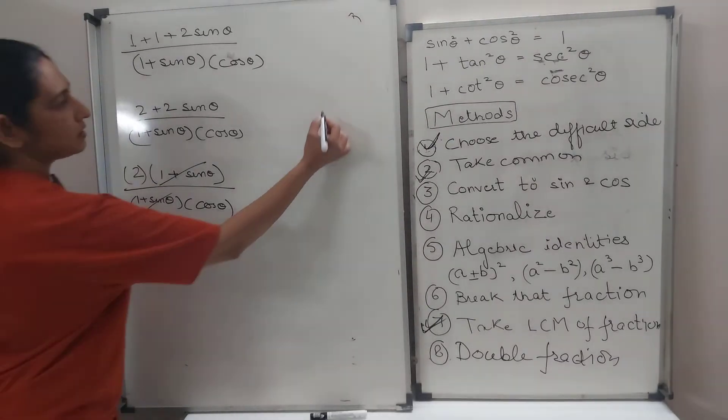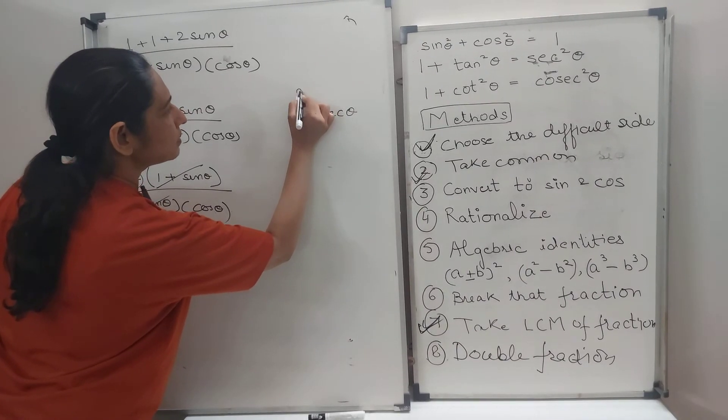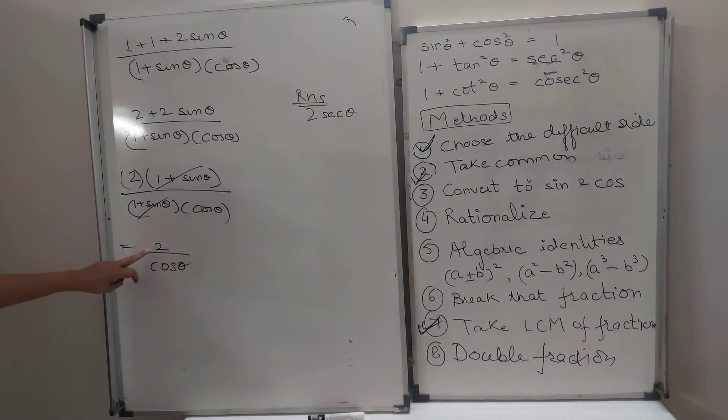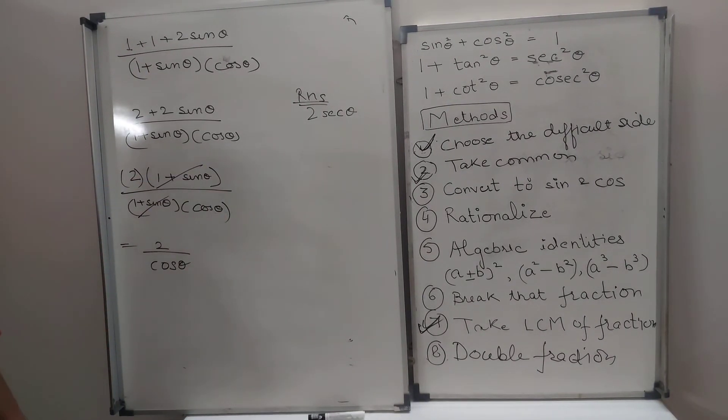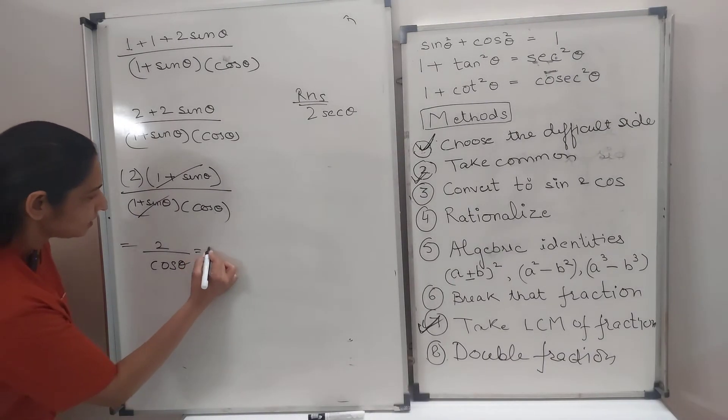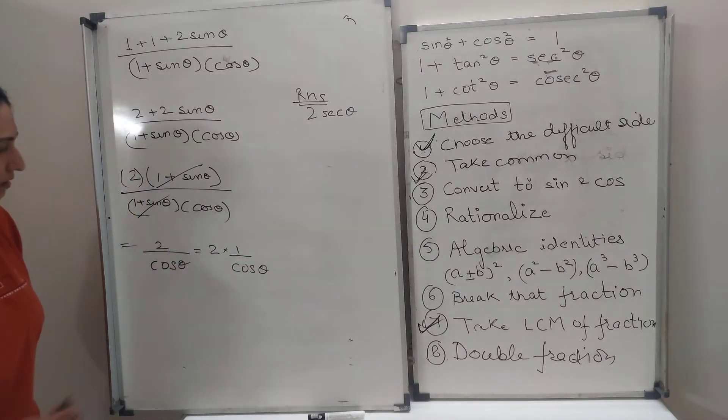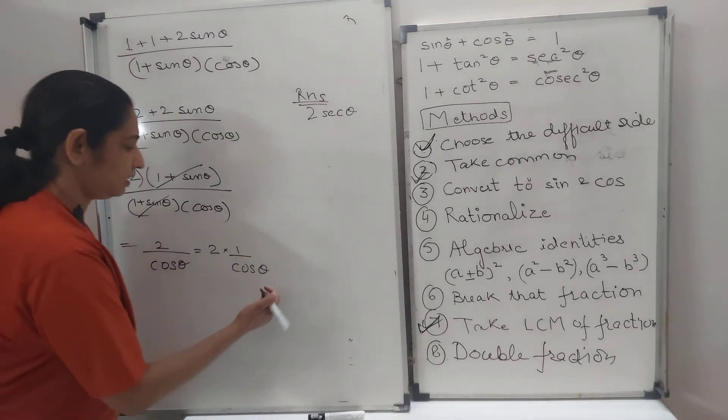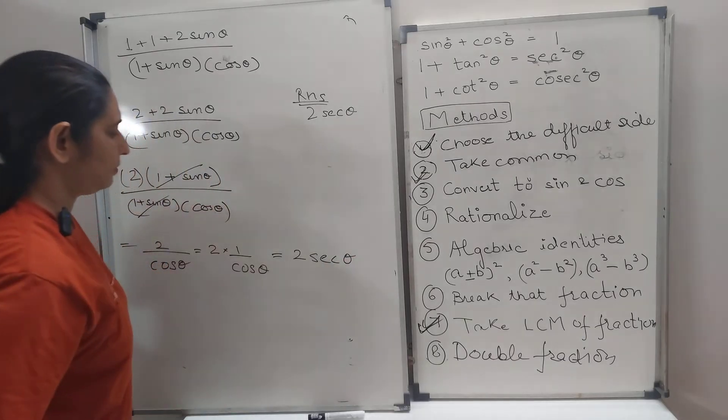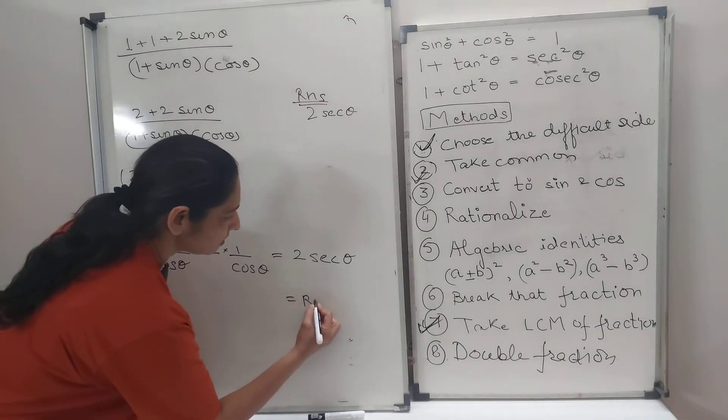Now look at the RHS that we wanted. Oh, where is it? It got rubbed. The RHS that we wanted was, keep a look at it continuously, 2 sec theta. So, see, we already got 2. Sec theta nahin, par cos hai. Cos and sec are related. So, can I write it as 2 and 1 upon cos theta? I can easily do that. This can be convertible into that. And then, nothing to worry about. 1 upon cos is sec. And we have reached our RHS.